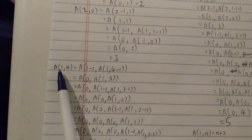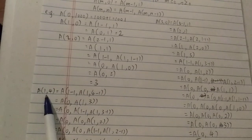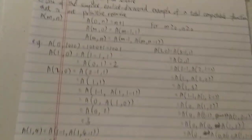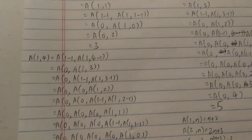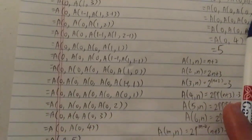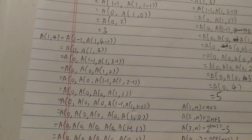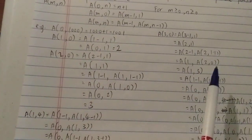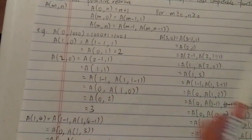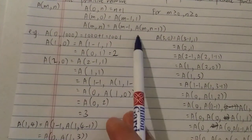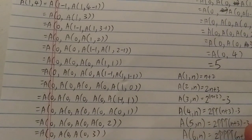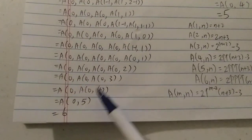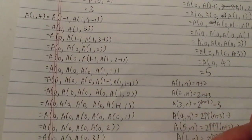Now let's look at A(1, 4). Since both M and N are non-zero, you start with the third case. Every time M and N are both non-zero you have to invoke the Ackermann function again, making it a very long calculation. You can pause the video to follow along, but at the end you get the result of six. You can get a small answer but you have to do a lot of steps — and remember, one and four are still relatively small numbers.